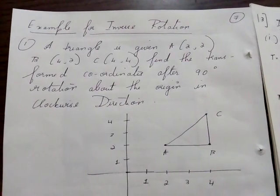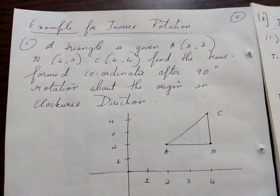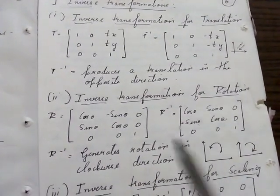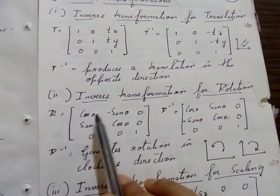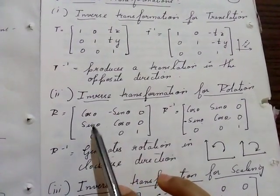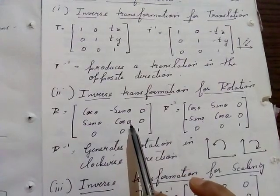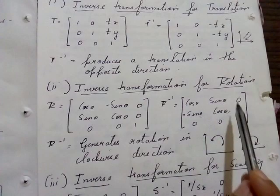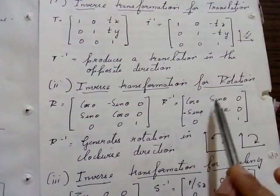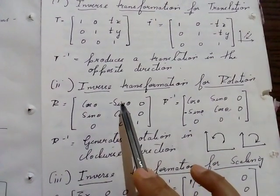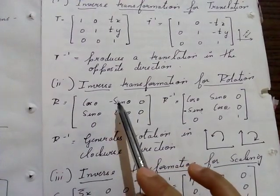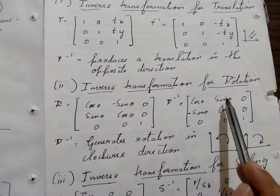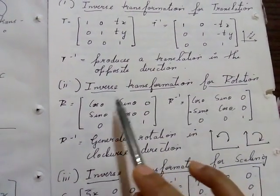Hello students, this is one example on inverse rotation. If you are performing normal rotation, the matrix you will have to use is cos theta, sine theta, minus sine theta, cos theta. But if you have to perform the inverse rotation, you use cos theta, minus sine theta, sine theta, cos theta — the sine signs change.